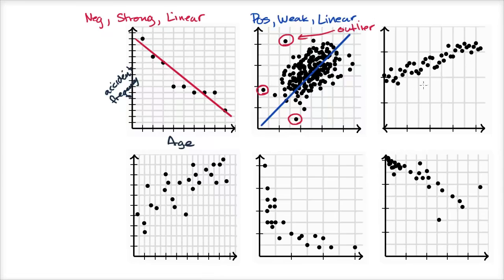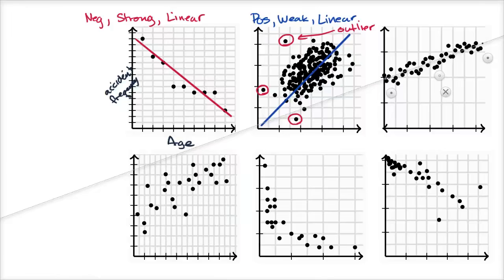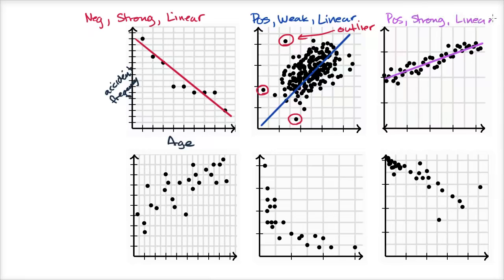Pause the video and think about this one: is it positive or negative, linear or nonlinear, strong or weak? I'll get my ruler tool out. It seems like I can fit a line pretty well to this — maybe I'll do the line in purple. This one looks positive: as one variable increases, the other one does too. I'd say this is pretty strong — the dots are pretty close to the line, it really does look like a fat line if you just look at the dots. So positive, strong, linear relationship. None of these data points are really strong outliers — they're all pretty close to the line.